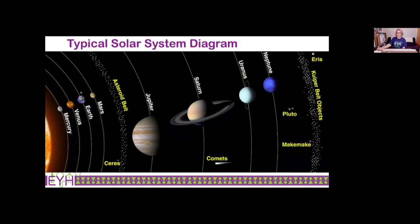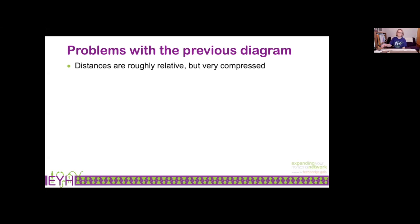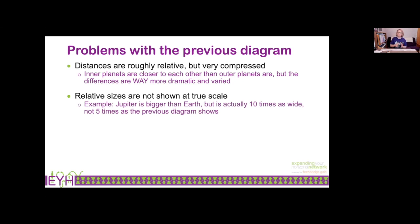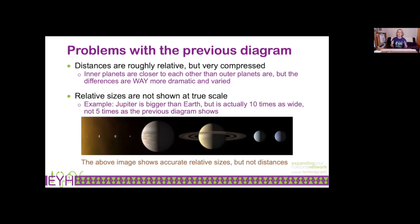Let's talk about some things that are wrong with this diagram. First, the distances are roughly relative in that some planets are closer and some are farther away, but it's not completely accurate. That is something we're going to see today that's different from any picture you've probably seen. The relative sizes are also not quite shown correctly — in that previous one, Jupiter looks about five times bigger than Earth, but in actuality Jupiter is more like ten times as wide as the Earth.